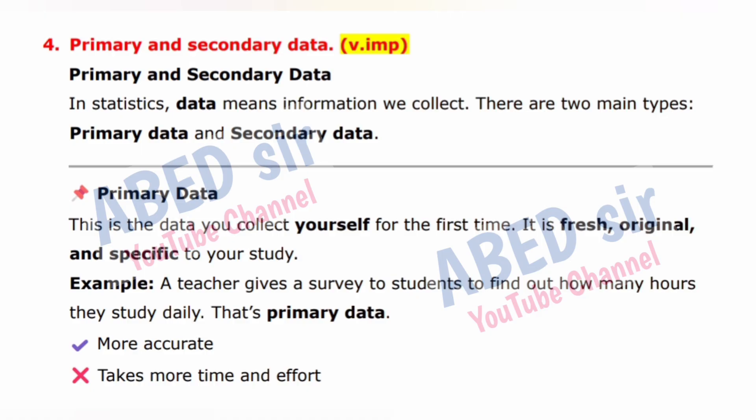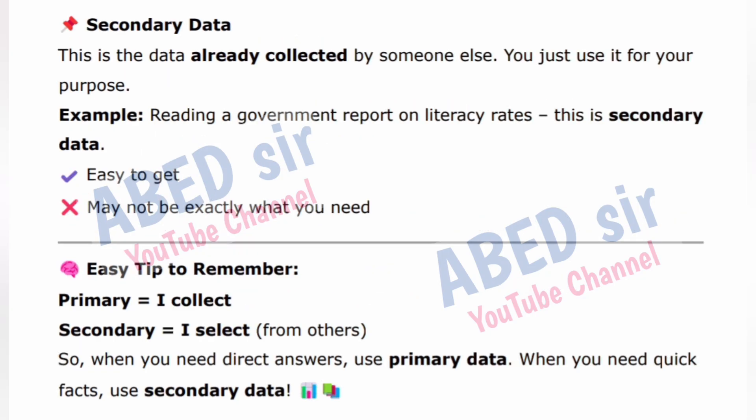Primary data is more accurate but takes more time and effort. Secondary data is data already collected by someone else that you use for your own purpose. Example: Reading a government report on literacy rates — that is secondary data. It is easy to get but may not be exactly what you need. Easy tip to remember: Primary equals 'I collect'; Secondary equals 'I select from others.' When you need direct answers, use primary data. When you need quick facts, use secondary data.